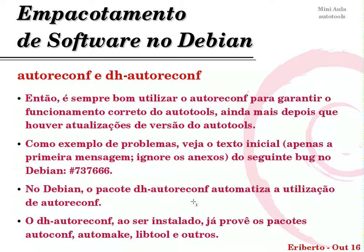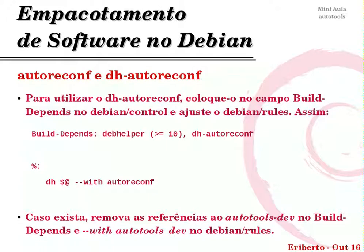O dh-autoreconf no Debian automatiza a utilização do autoreconf. Quando instalado, ele já provê os pacotes autoconf, automake, libtool e outros que sejam necessários. É muito fácil usar o dh-autoreconf: basta ir no debian/control, no campo Build-Depends, e adicionar dh-autoreconf; e no debian/rules, na linha do dh que faz a construção geral, adicionar --with autoreconf.